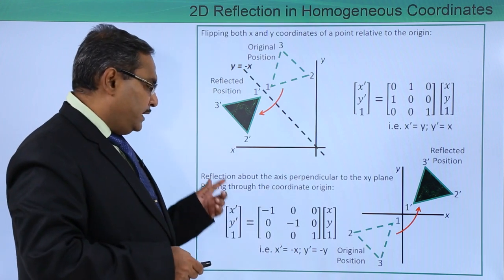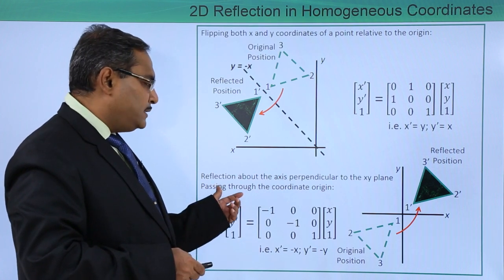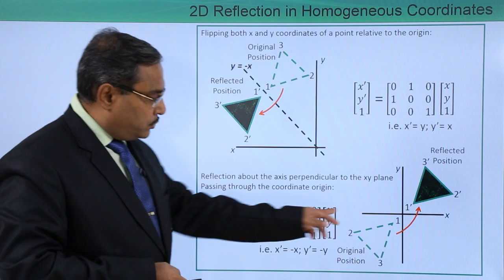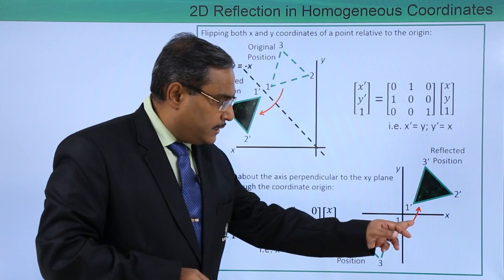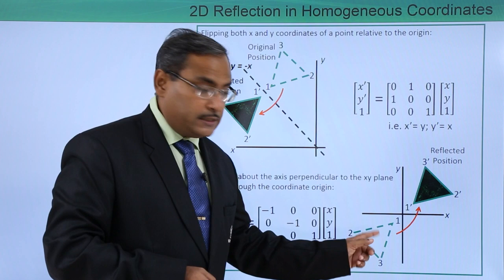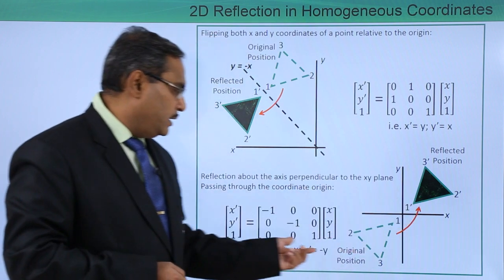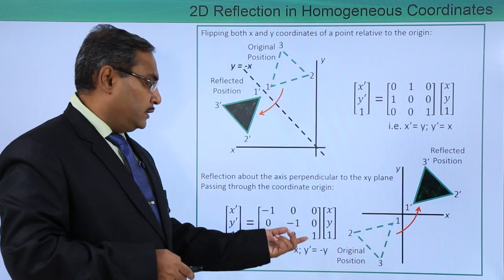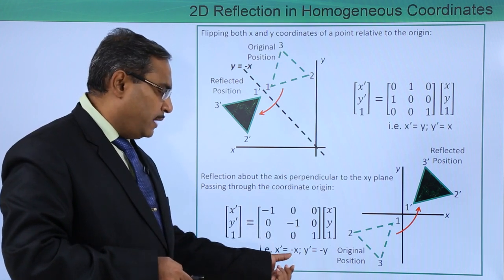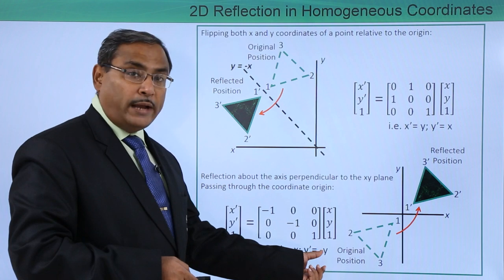Here you see reflection about the axis perpendicular to the x-y plane passing through the coordinate origin. Across this line the reflection is taking place. This is the original position, this is the reflected position, and the transformation matrix gives x' equal to minus x and y' equal to minus y.